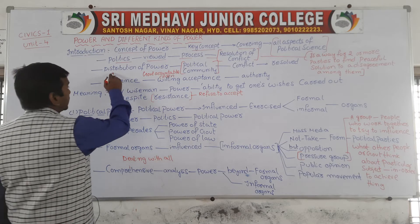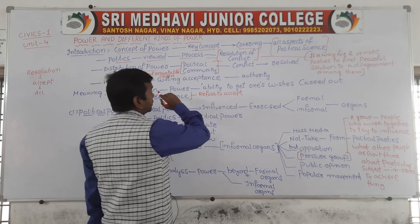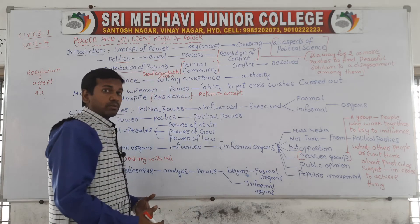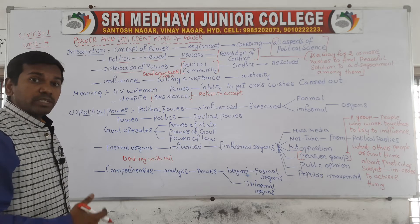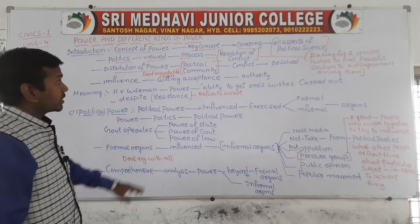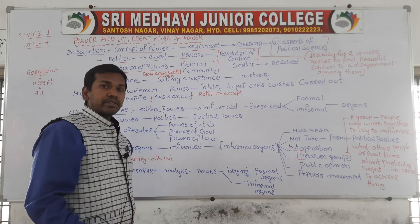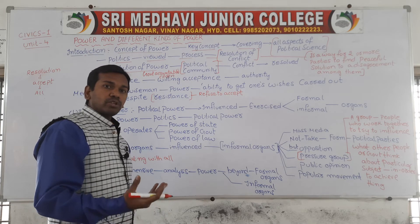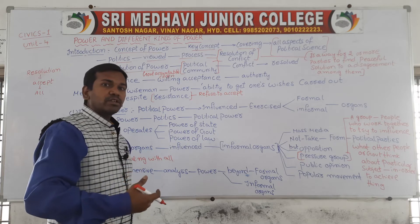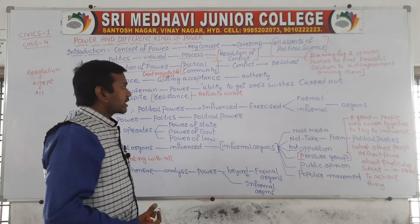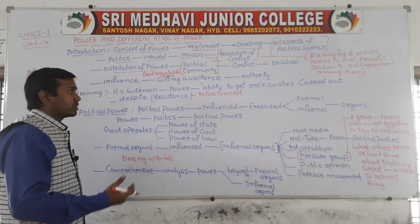Here, if we see the distribution of power — power must be distributed in the political community so that conflicts can be resolved. Most of the powers must be distributed to political communities to decrease conflicts. Political communities are nothing but the government — any authority which is accountable to the people. So distribution of power takes place among political communities so that conflicts must be resolved.